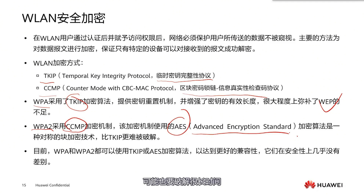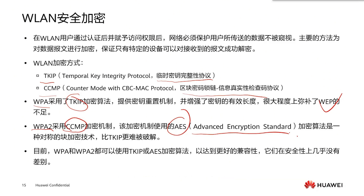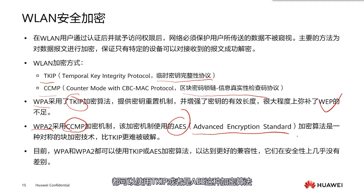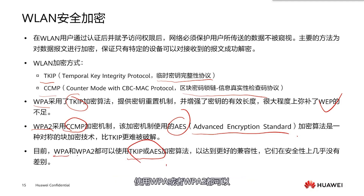As the protocols evolve, both WPA and WPA2 can use either TKIP or AES encryption algorithms, so we can choose between WPA or WPA2 based on our needs. This ensures that the data we transmit is protected from eavesdropping.